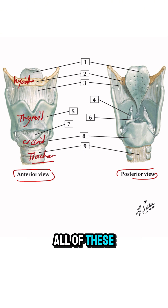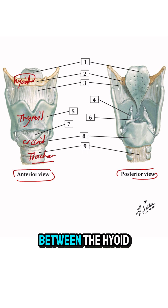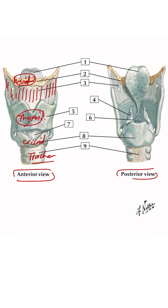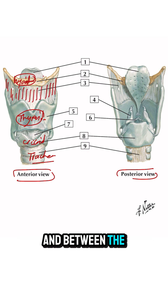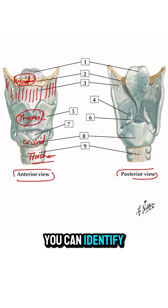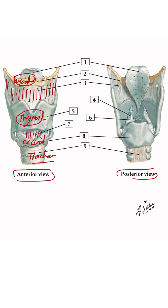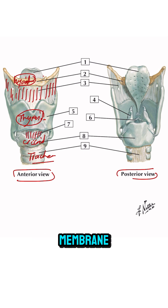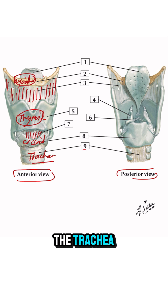All of these are connected by some membranes or ligaments. Between the hyoid bone and the thyroid cartilage, you can identify the thyrohyoid membrane. And between the thyroid and cricoid cartilage, you can identify the cricothyroid ligament, or the cricothyroid membrane. And number nine is going to be the trachea, of course.